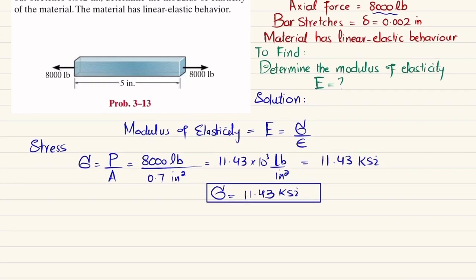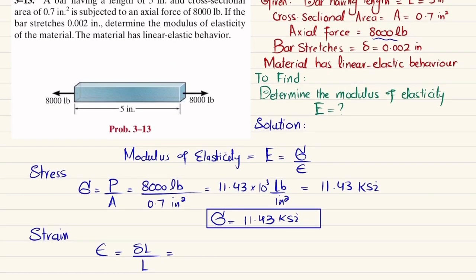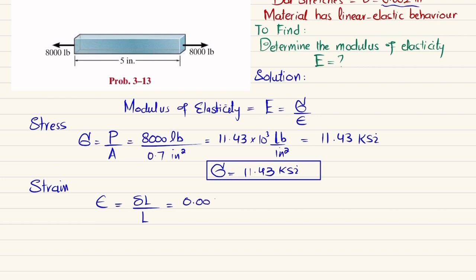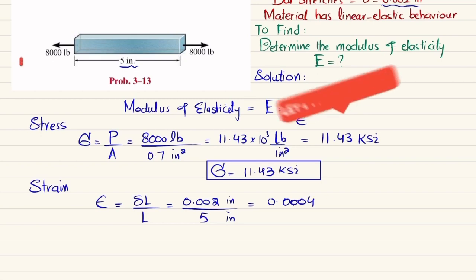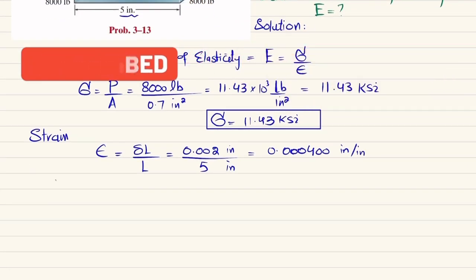Next, strain equals change in length divided by original length. Change in length is 0.002 inch and the original length is 5 inch, so strain = 0.002 / 5 = 0.0004 inch per inch (dimensionless).